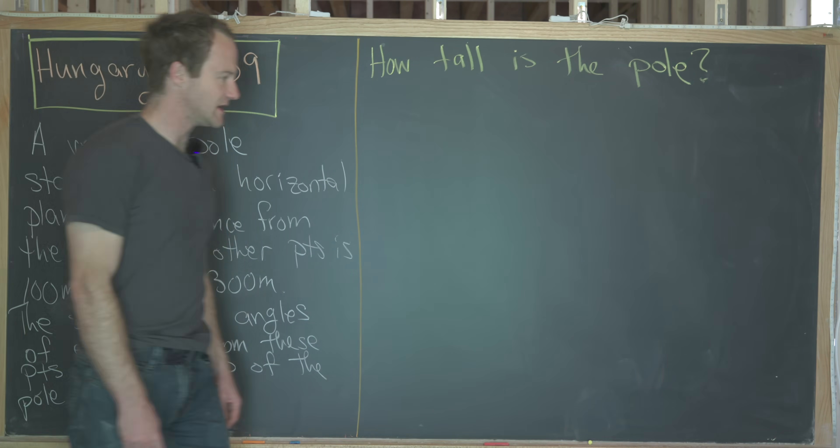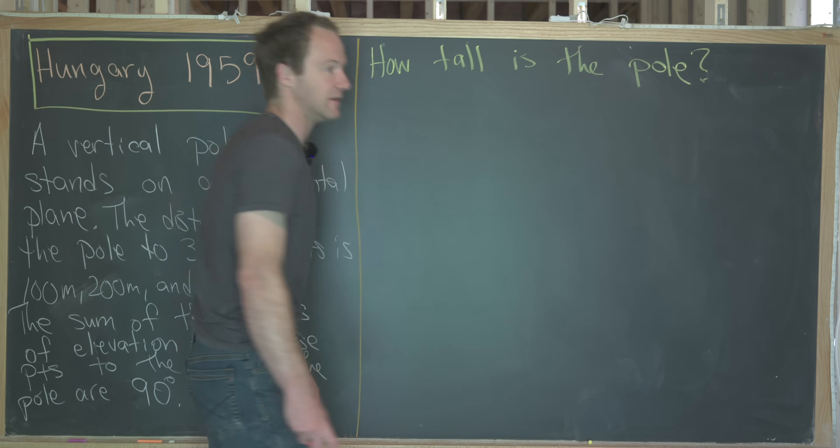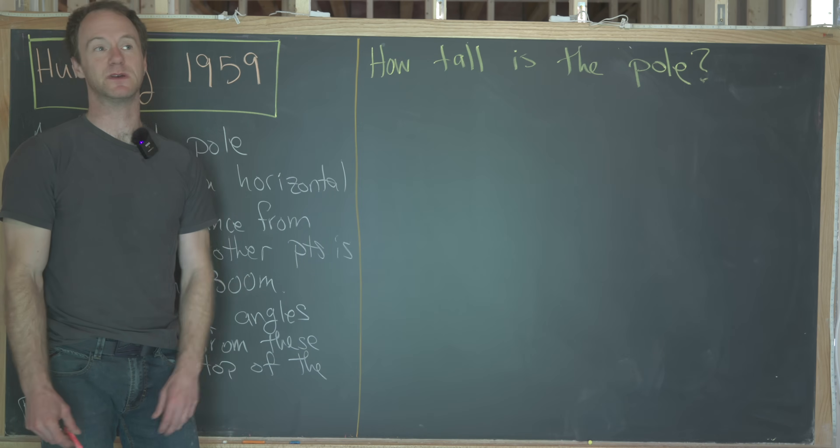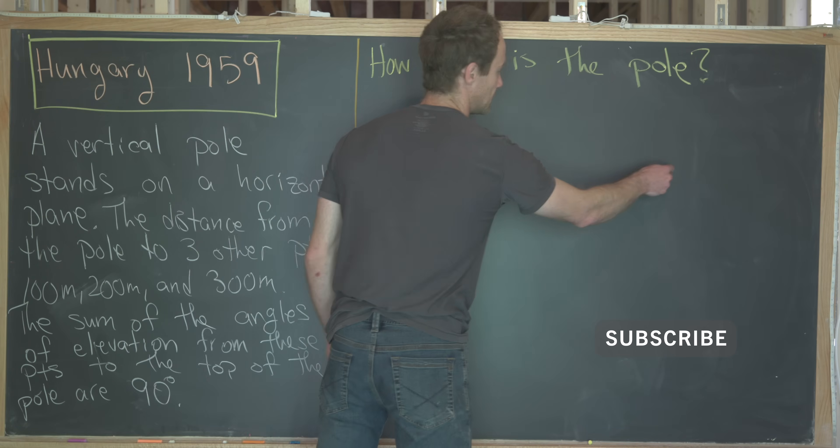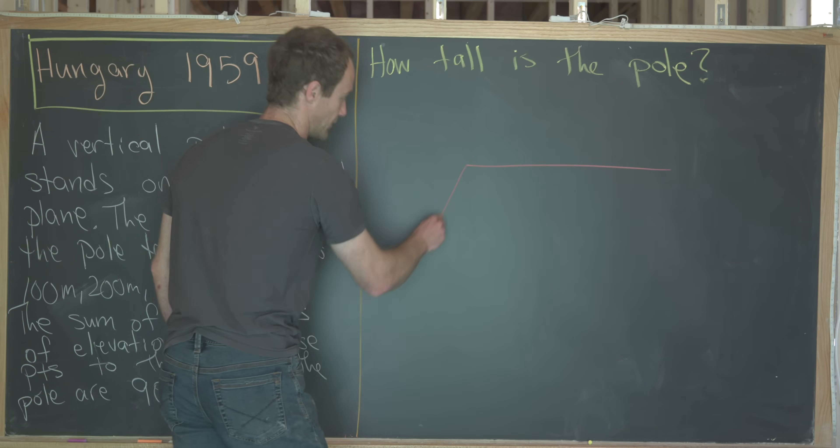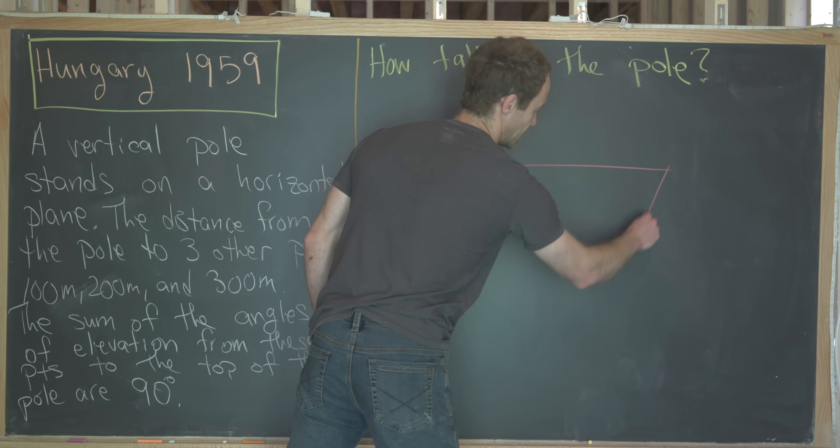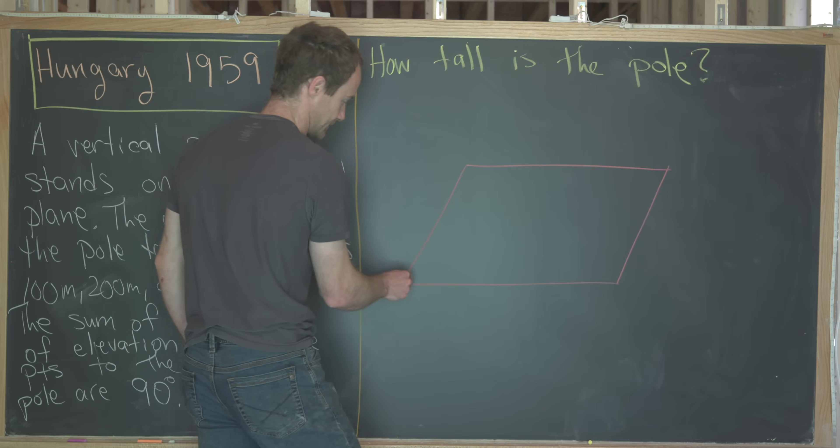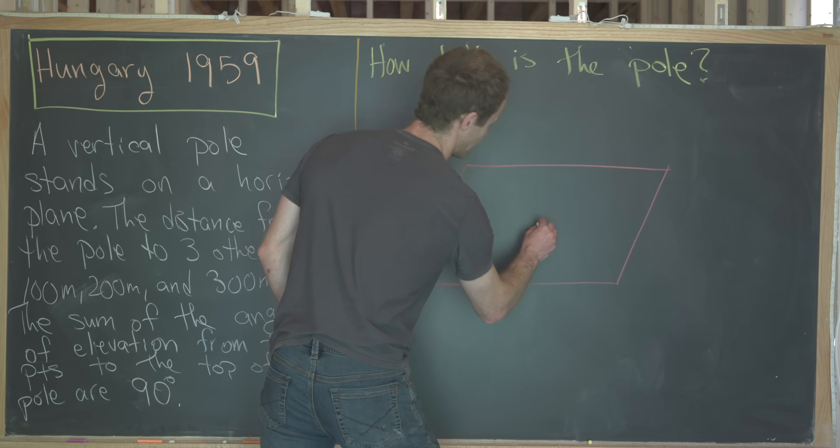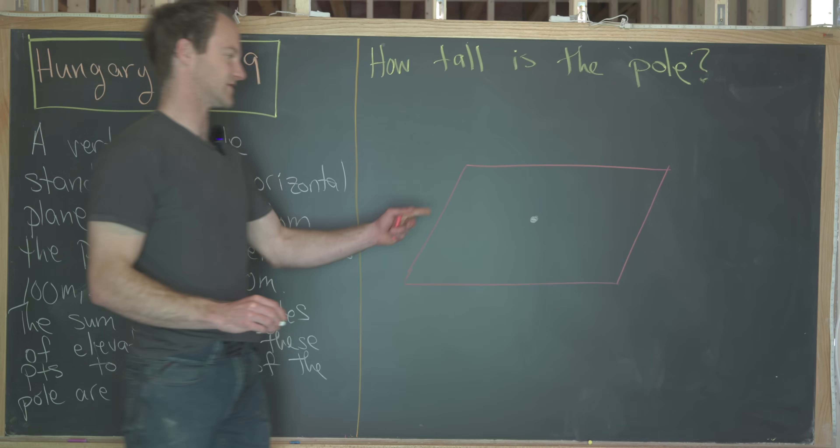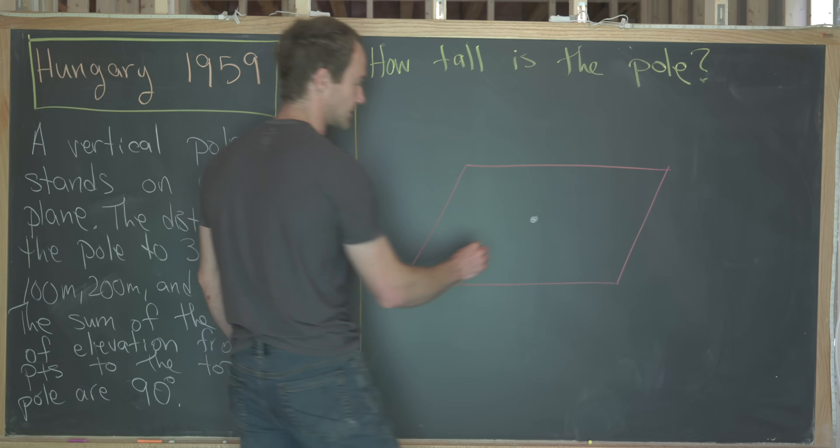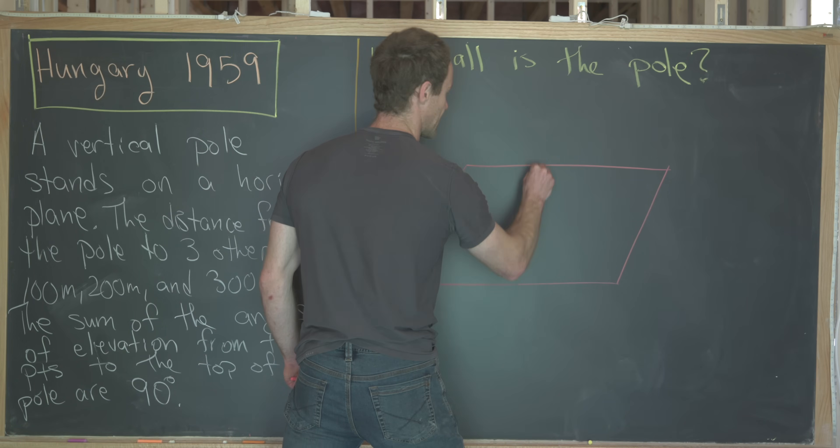So let's get a picture going, and then that picture will help us build a system of equations that we can use to solve for the height of this pole. I'm going to start by drawing a plane, so I'll draw the plane like this, and then I'll put my pole in the center of the plane. Although this is an infinite plane, so there is really no center. So my pole is going up like this.